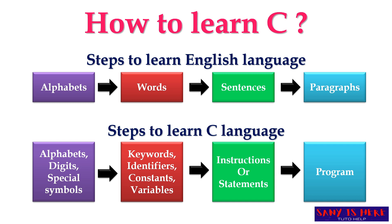By using keywords, identifiers, variables, and constants, we can write a single statement, also called an instruction. As you all know, a program is a set of instructions. With different instructions it will become a program. A program can have more than one instruction — there will be different statements to solve a problem, and we need to provide different instructions to solve a problem. To write instructions, we need the help of alphabets, digits, and special symbols.